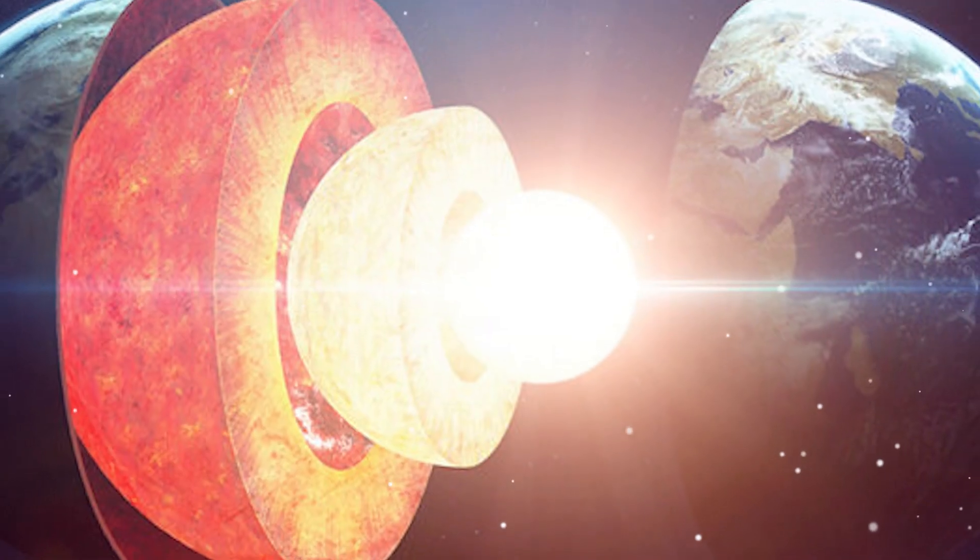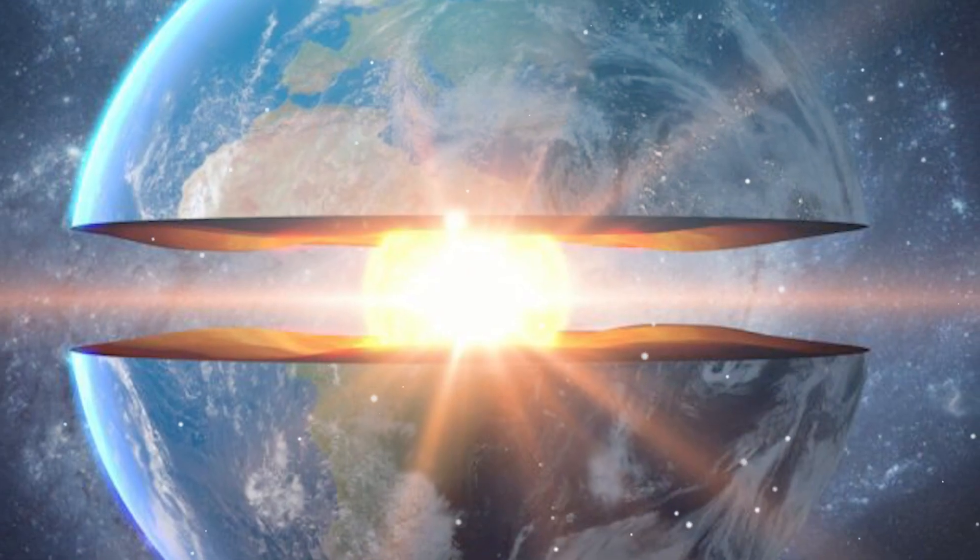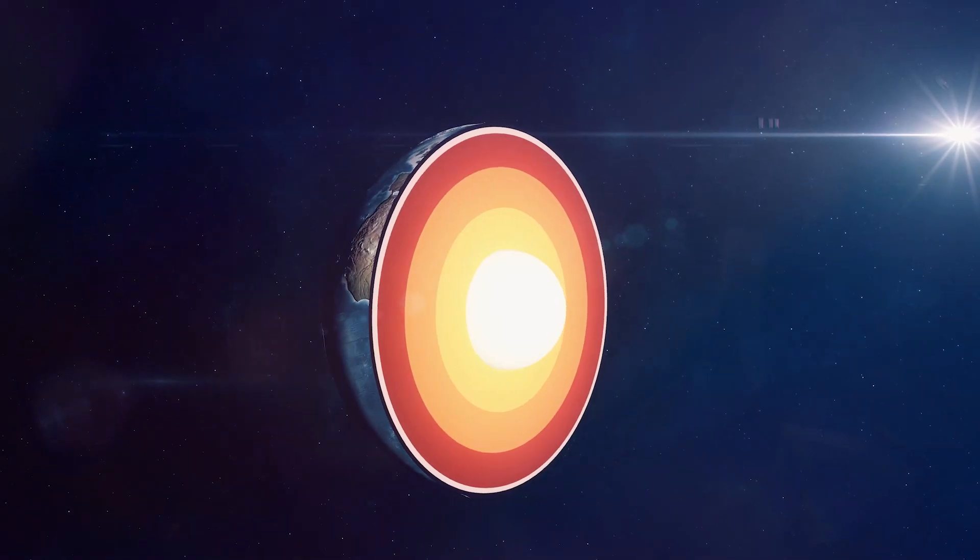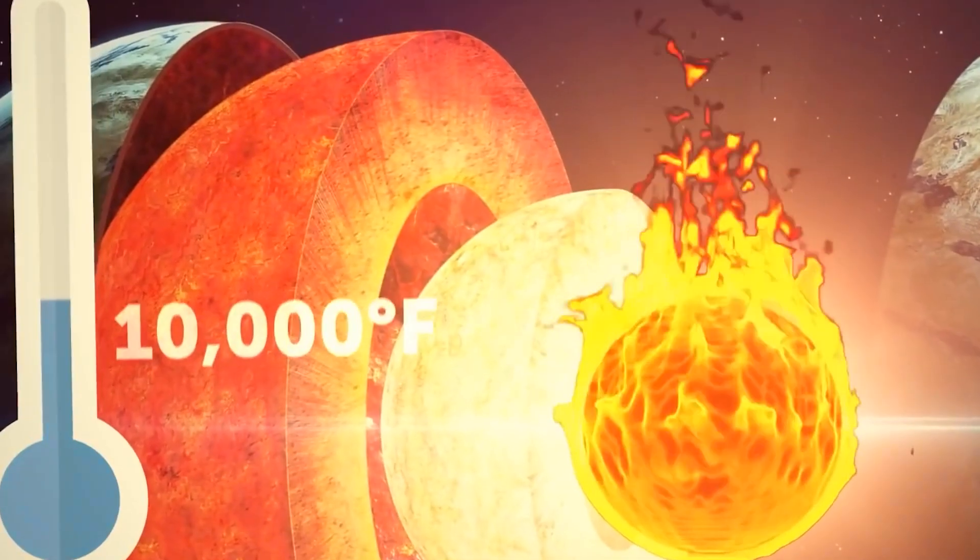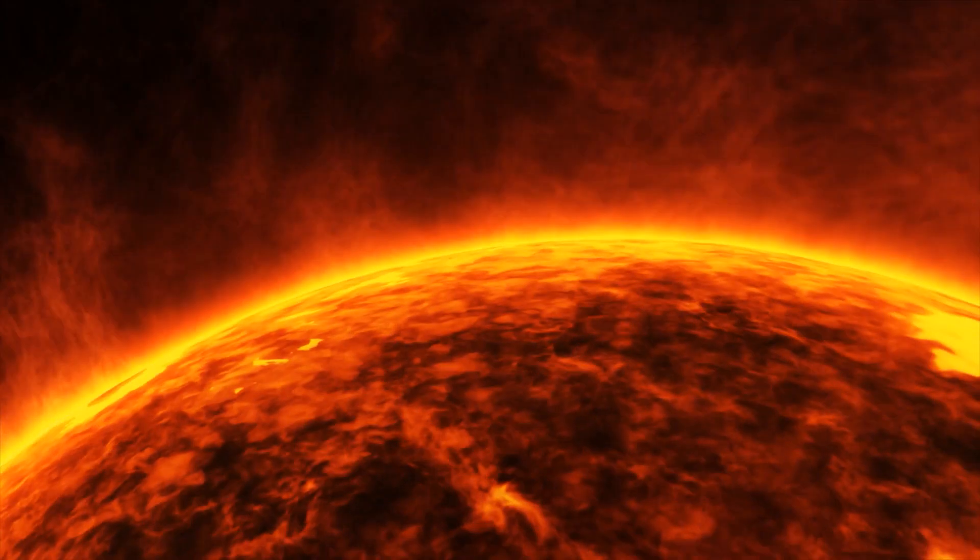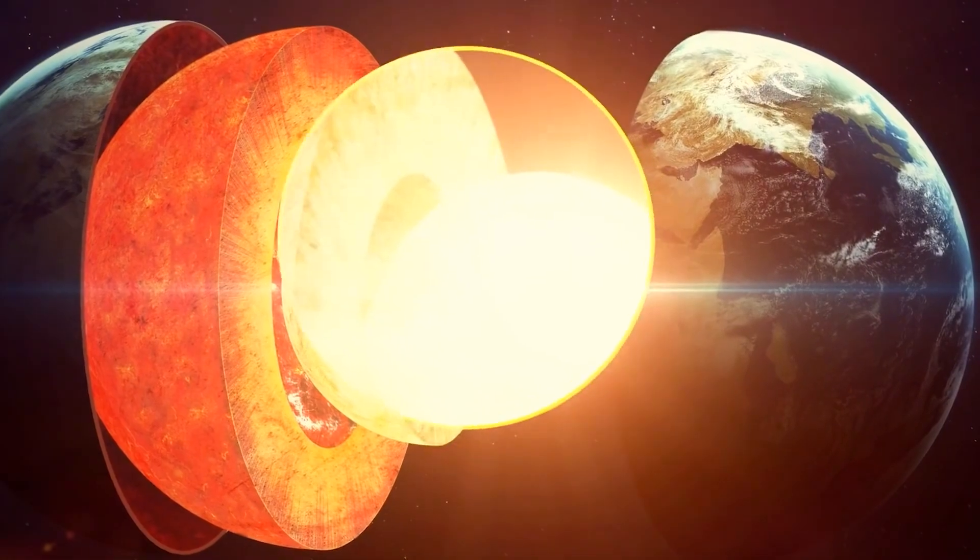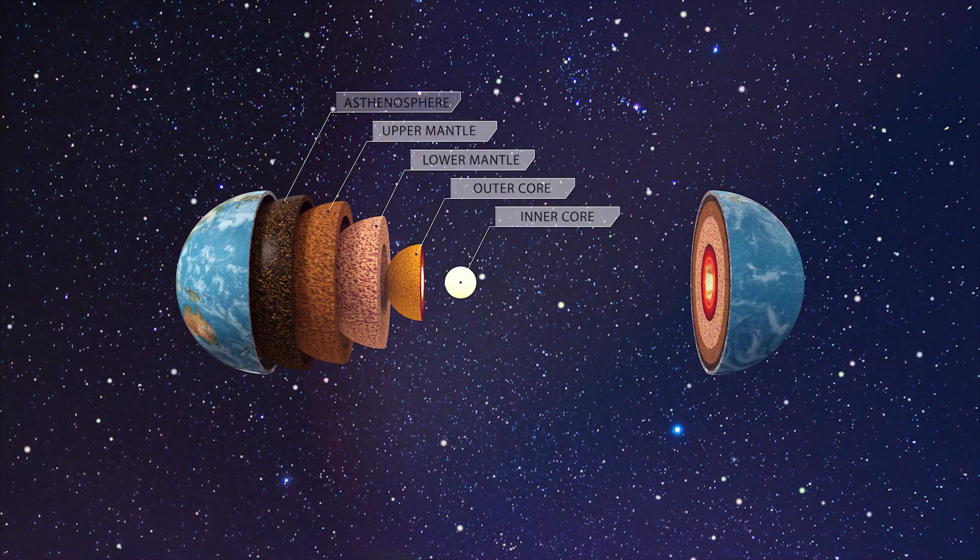Deeper still we reach the inner core. This is like the earth's solid core, composed mainly of iron and nickel. Despite being incredibly hot - we're talking about temperatures hotter than the surface of the sun - the immense pressure at this depth keeps things solid. Well, this brings us to the end of this video.